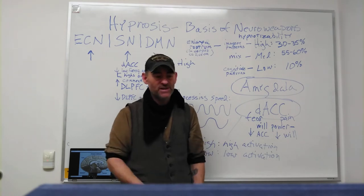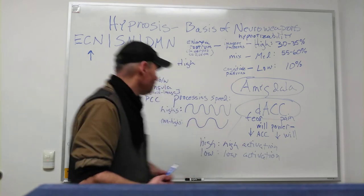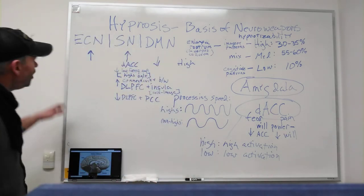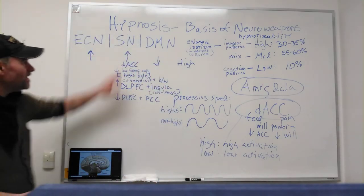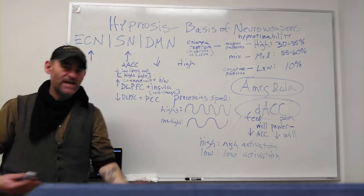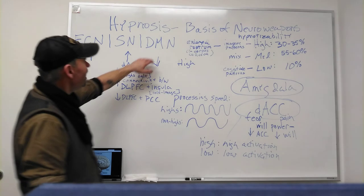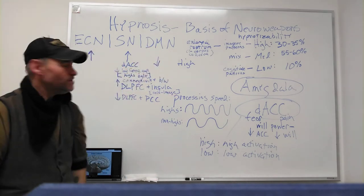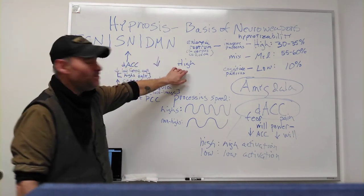Now going back to this executive control network, the salience network, salience network gives us contextual information, and the default mode network. In highly hypnotizable people when they go into hypnosis their default mode network goes down.